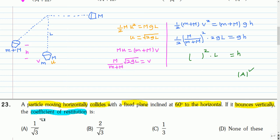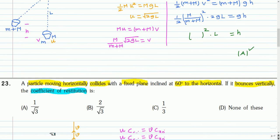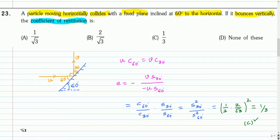This is the next question. A particle moves horizontally and collides with a fixed plane inclined at 60 degrees to the horizontal. If it bounces vertically, the coefficient of restitution is to be found. The inclined plane makes an angle of 60 degrees, so the alternate angle is also 60 degrees. Since it moves vertically up after collision, this angle is 90 degrees, making the remaining angle 30 degrees.